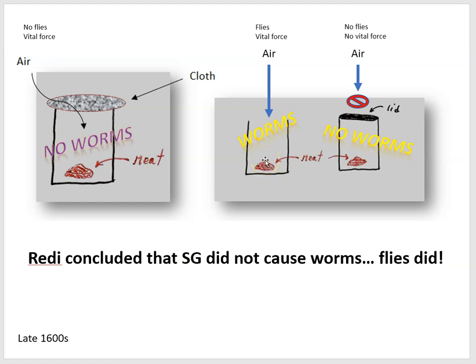Francisco Redi had other ideas. He carefully observed the situation and found that flies would often land on the meat. Then he saw little ovals — fly eggs — and these eggs hatched into larvae. The worms were really fly larvae.